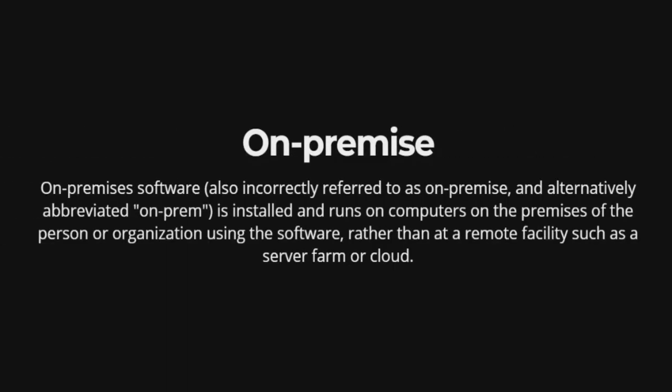On-premises software, also incorrectly referred to as on-premise and alternatively abbreviated on-prem, is installed and runs on computers on the premises of the person or organization using the software, rather than at a remote facility such as a server farm or cloud.